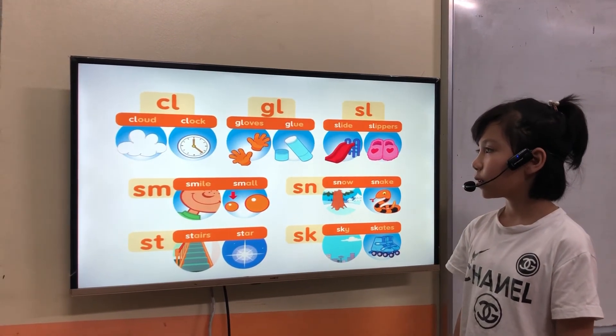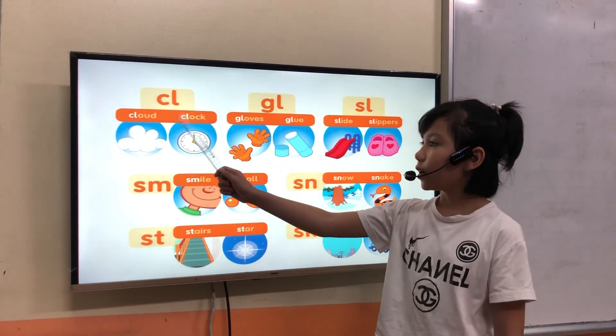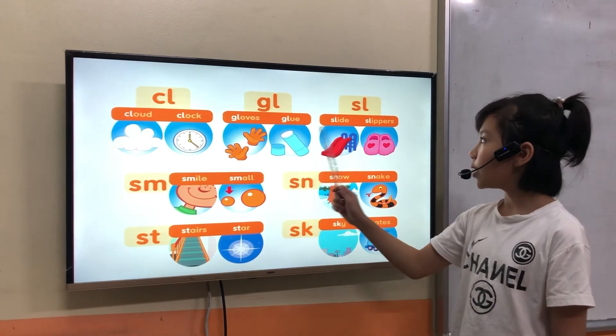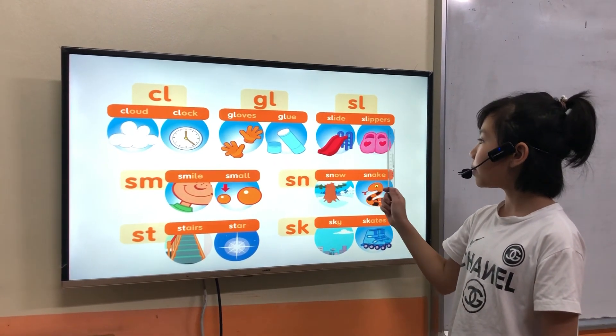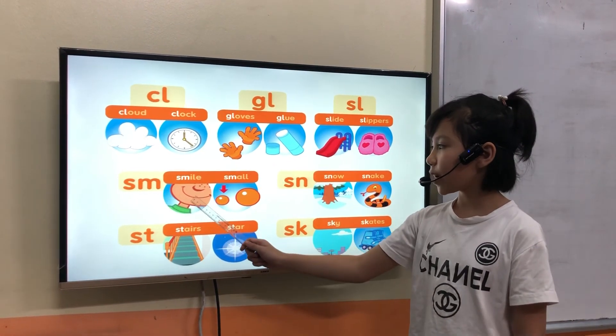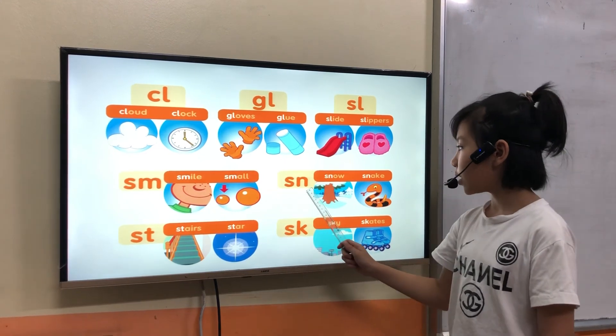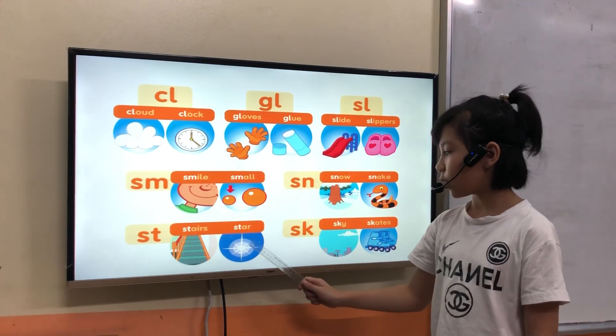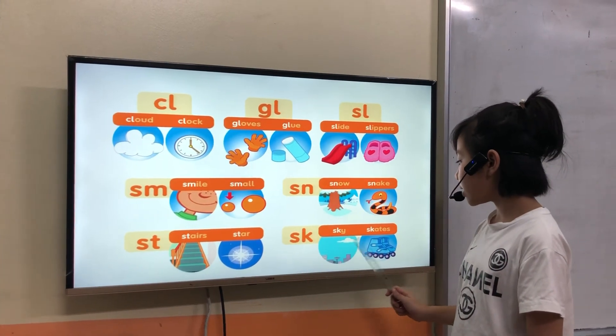Now pronounce and point and see. Clown, cluck, glove, glue, slime, slippers, smooth, smile, small, sniff, snow, snake, stuff, steel, star, scoop, sky, skate.